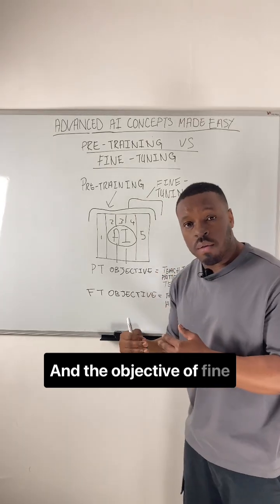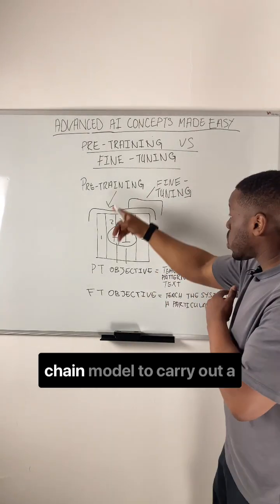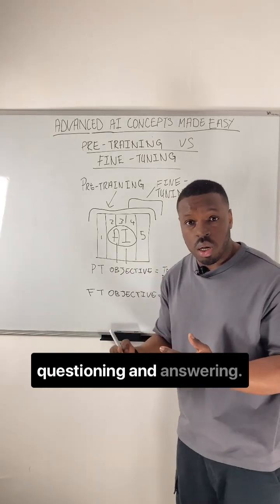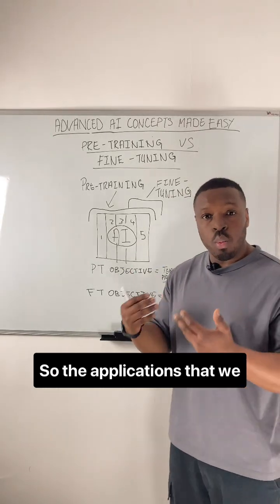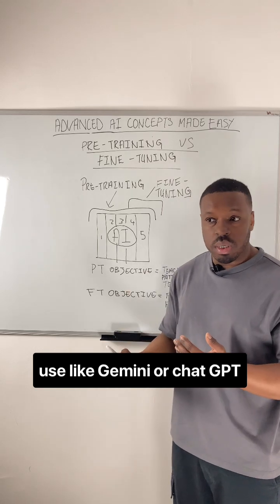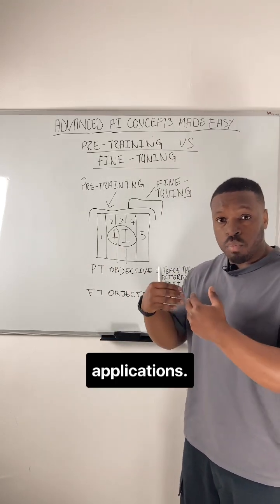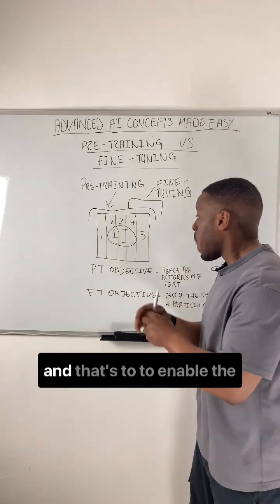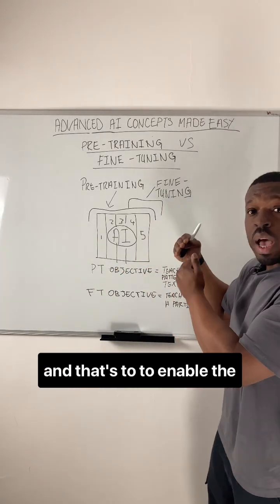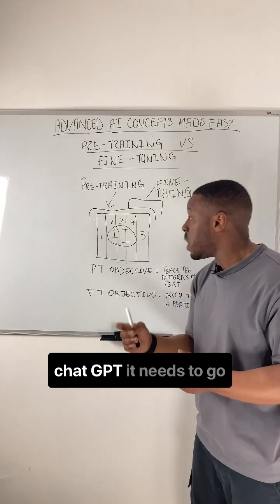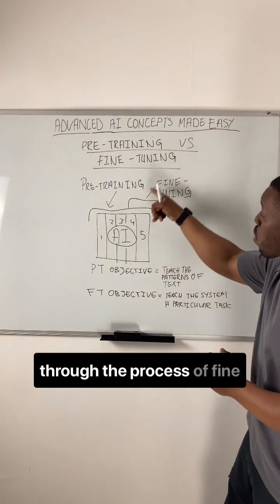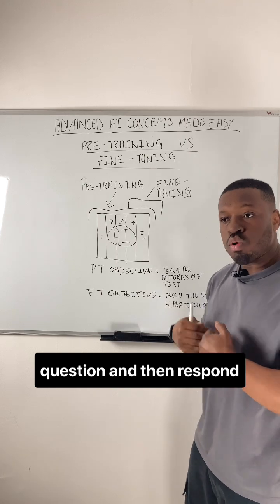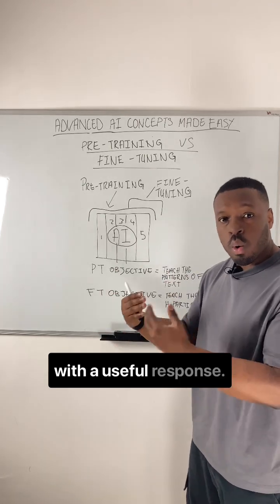The objective of fine-tuning is to enable the pre-trained model to carry out a particular task like question and answering. Applications like Gemini or ChatGPT are question and answering applications — they don't just complete sentences for us. To enable that, like ChatGPT, it needs to go through the process of fine-tuning to take in a question and then respond with a useful response.